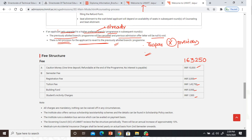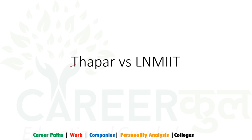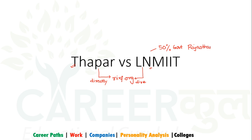Now we are looking at Thapar versus LMNIT. The data is from NIRF.org, submitted directly by the institutes. LMNIT is 50% Government of Rajasthan funded, so there are fewer chances of bad data. 50% is Arcelor Mittal, a major tycoon. Plus Thapar is a 1950s college — very old and very reputed.